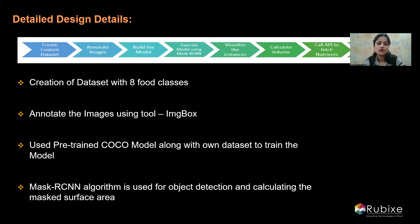I'll now hand over to my colleague Shikha, who will explain the volume calculations. Thank you Garima — I will walk you all through the technical details of calculation of area, volume, and weight parameters in our project. Once object detection is done through Mask RCNN, the next step is to calculate the surface area of the food detected through the pixel count of the mask.